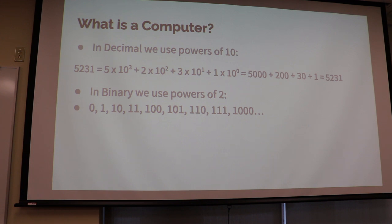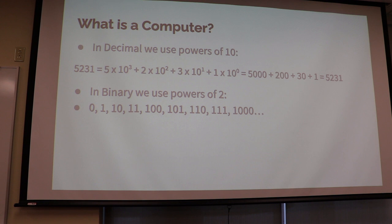So when you're counting in binary, you go zero, one — oh, you've run out of digits. So you need to go to the next place: one zero, one one. We've run out of digits again, so we go on up. This represents zero, one. The one zero represents two, three. Then we have to go over and that's four, five, six, seven. Then we have to go over again and that's eight.